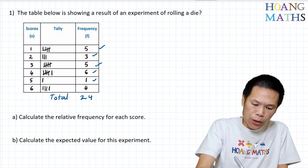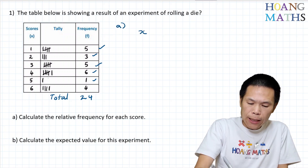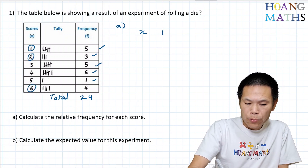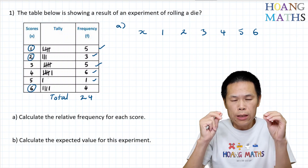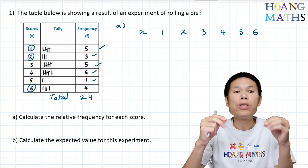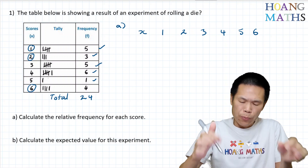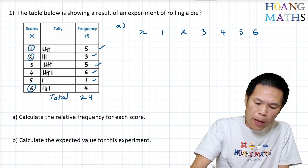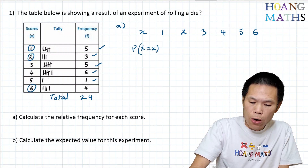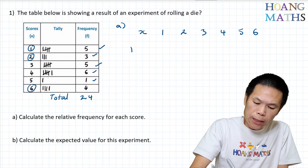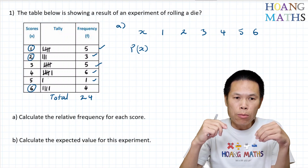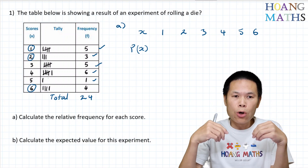Let me list a different table. So part A. X is the score here: 1, 2, all the way to 6. To work out the relative frequency for each score, we use the frequency of the score over the total frequency. I can write relative frequency, or I can write probability of X equals x, or even just probability of X. Because relative frequency is just like probability — in theory it's probability, but in practice we call it relative frequency.